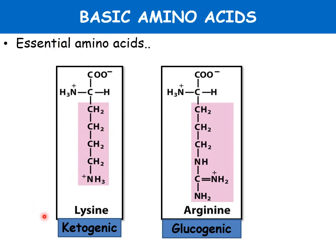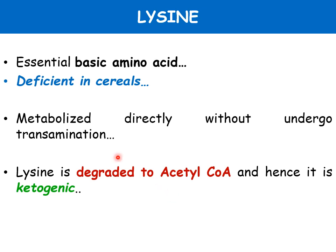Of these two amino acids, lysine is a ketogenic amino acid while arginine is a glucogenic amino acid. Lysine is an essential amino acid — it is deficient in cereals and becomes the limiting amino acid, as cereals contain all amino acids except lysine. It is metabolized directly without undergoing transamination. Unlike most amino acids where transamination is the first metabolic step, lysine is an exception — it is degraded to acetyl-CoA, making it ketogenic, since acetyl-CoA is essential for the synthesis of ketone bodies.